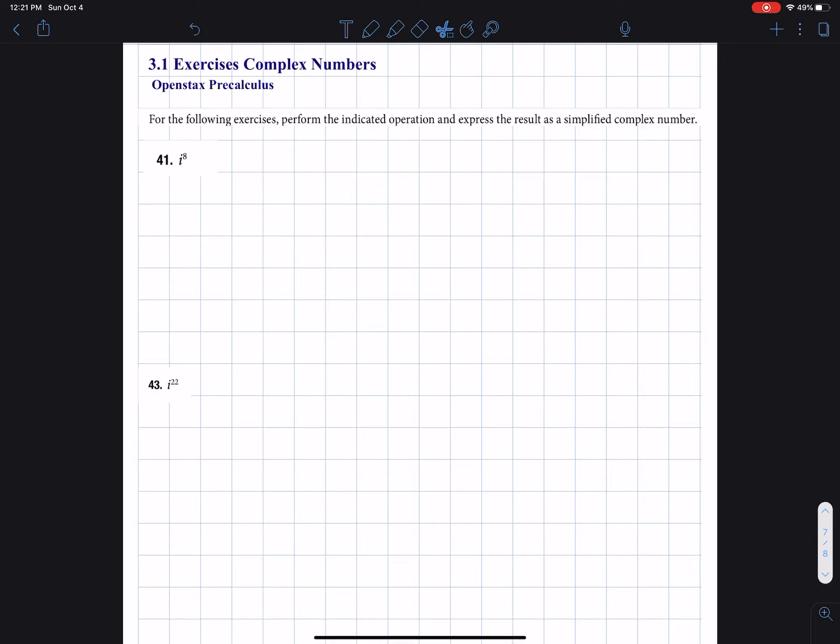Number 41 and 43 from OpenStax Pre-Calculus. We want to write our complex number in simplified form. So what I'm going to use is, we're going to make an observation here. If you have i to the zero power, that's equal to one. i to the first power is i.